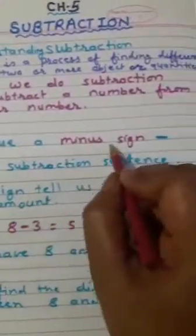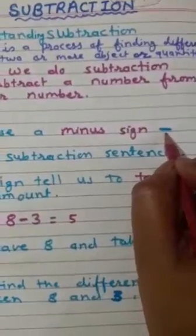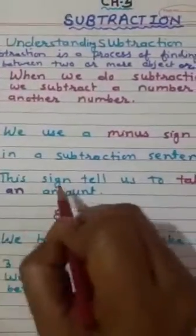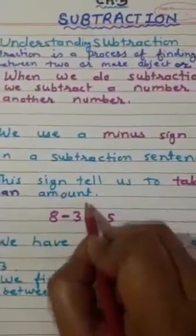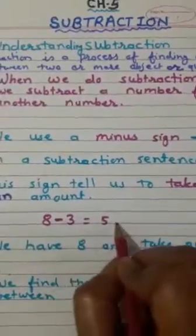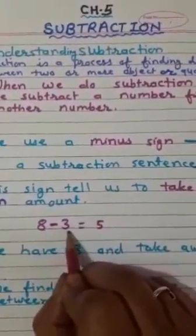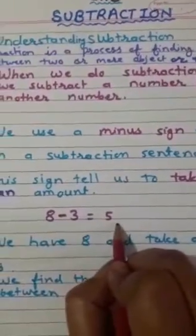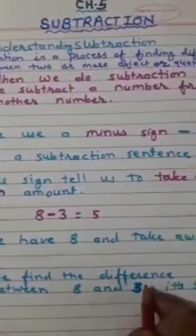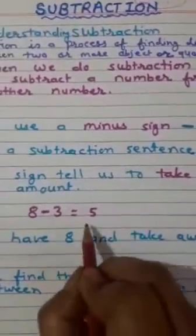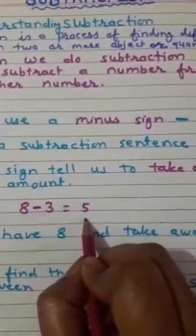We use a minus sign, this is minus sign. In a subtraction sentence, this sign tells us to take away an amount. For example, 8 minus 3 equal to 5. We have 8, take away 3, equal to 5. So we find the difference between 8 and 3 is 5.